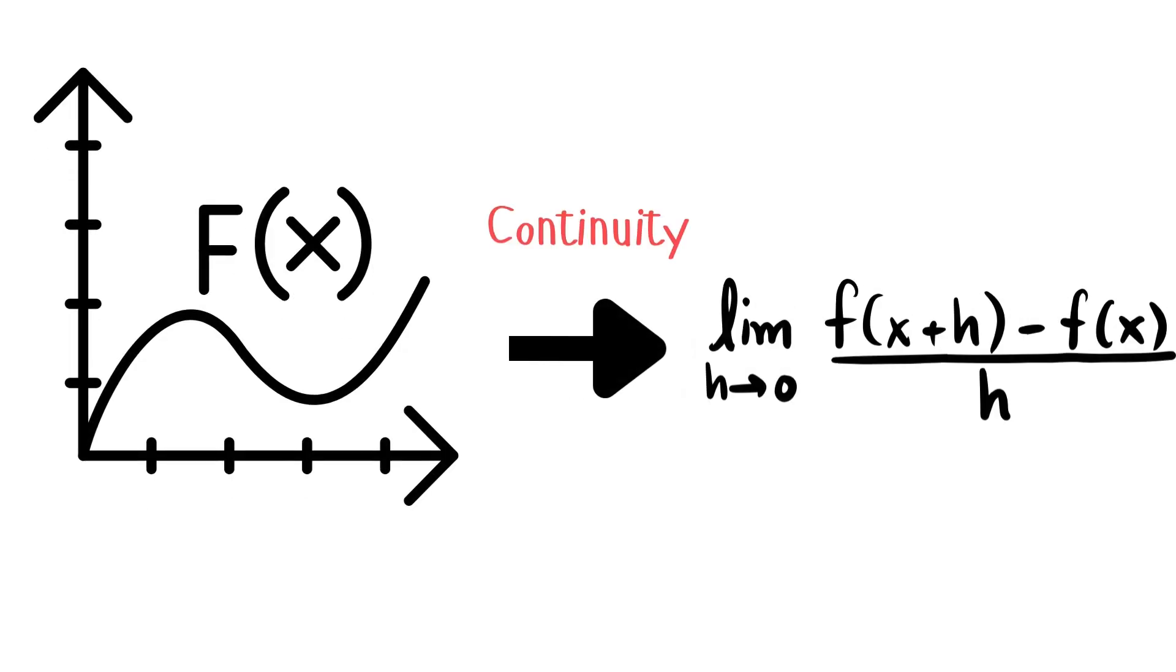At the time, people believed that if a function was continuous, then it must be differentiable at almost every point. After all, smoothness and continuity seemed to go hand in hand.